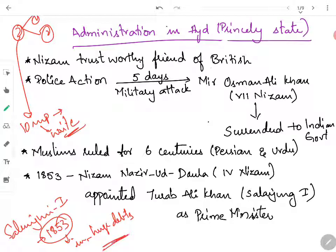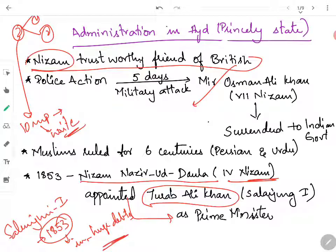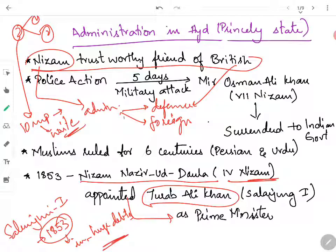Salar Jung I was appointed by Nizam Nazirutawla, the 4th Nizam, as Prime Minister. His real name was Turab Ali Khan. Regarding the status of Nizams in British rule, Nizams were trustworthy friends of the British. The British gave complete freedom to Nizams because they trusted them to a large extent. Nizams had complete control over all administrative matters except defence, foreign affairs, and communications.